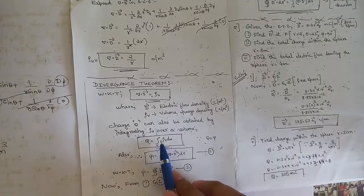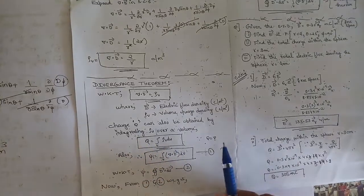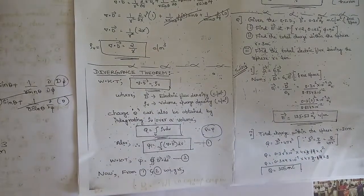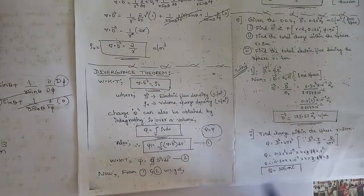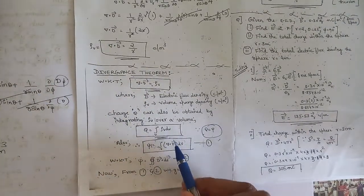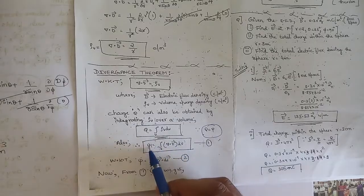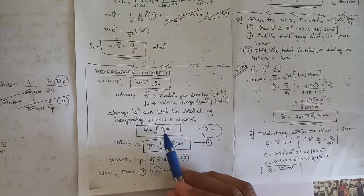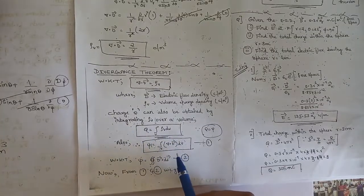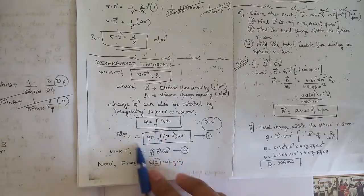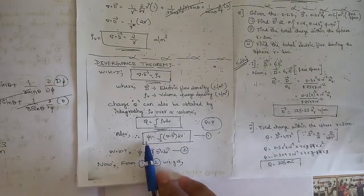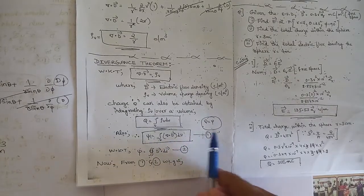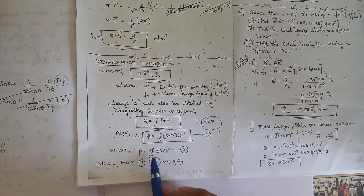That is, Q is equal to the volume integral of rho_v dv. According to Gauss's law, Q is equal to psi, and also del dot D is equal to rho_v. So in place of rho_v we write del dot D, and in place of Q we write psi. In this way the equation becomes: psi is equal to the volume integral of del dot D dv — call this equation one.